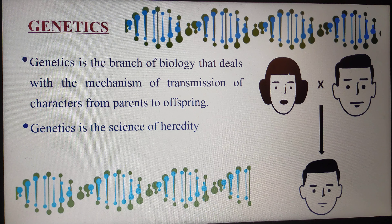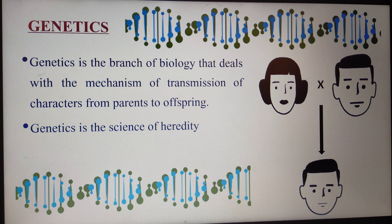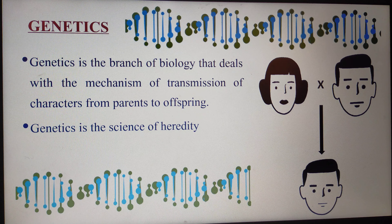Speaking in general, we call genetics the science of heredity, and this is the very precise definition for genetics. Heredity means transmission of characters from parents to offspring, or from one generation to another generation. The study of this heredity is what we call genetics. Genetics is the branch of biology that deals with the mechanism of transmission of characters from parents to offspring.